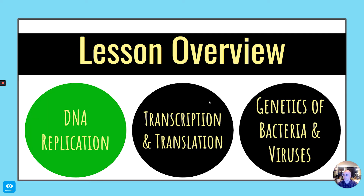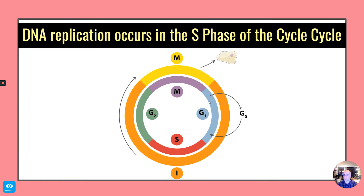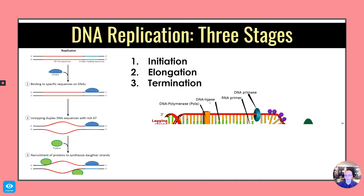So first let's talk about DNA replication. DNA replication occurs in the S phase of the cell cycle, as compared to G1, G2, or M phase.